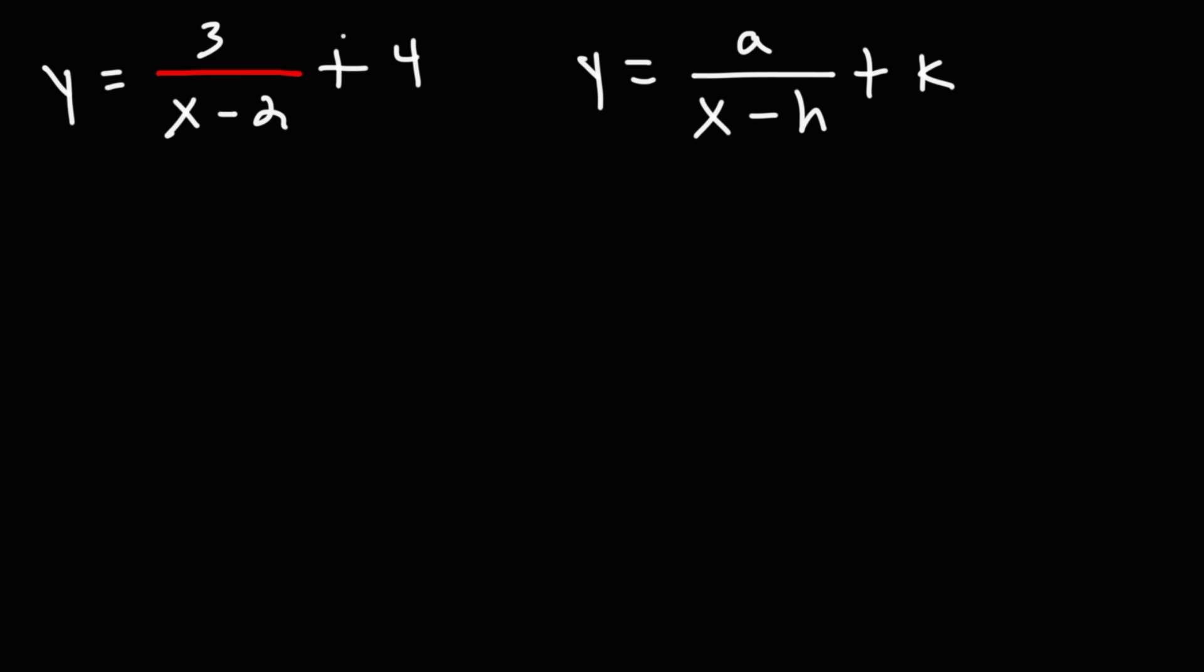Now what I'm going to do is draw a rough sketch of this function. And to do that, I need to determine the horizontal asymptote and the vertical asymptote. The horizontal asymptote will simply be y equals k, and the vertical asymptote is x is equal to h.